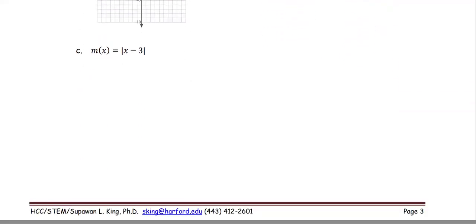In part c, the function m(x) equals absolute value of x minus 3. Based on the transformation, the graph has shifted to the right 3 units from the more basic function graph of the absolute value.